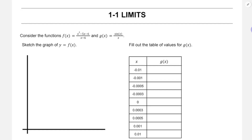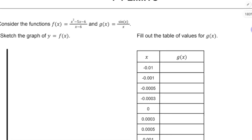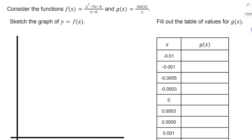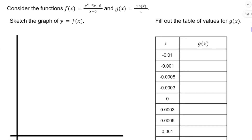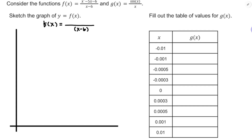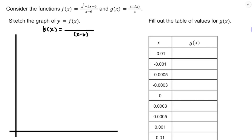We're going to start off with this function f of x, which is equal to x squared minus 5x minus 6, all divided by x minus 6. Hopefully you look at that numerator, see x squared minus 5x minus 6, and think this is a math class — I should probably factor this thing. Factoring will be something we need in this class. What two numbers multiply to negative 6 and add to negative 5?